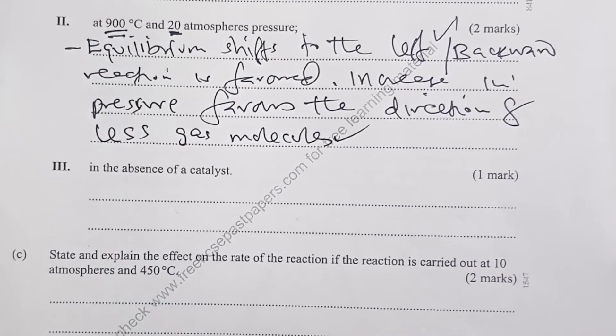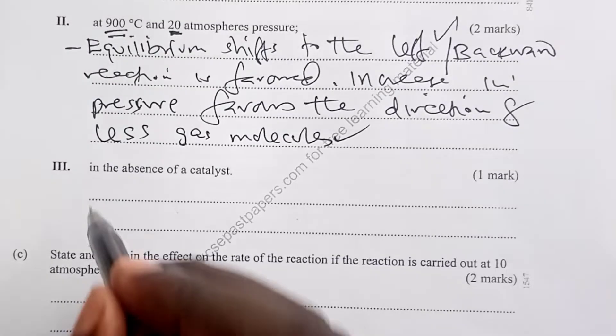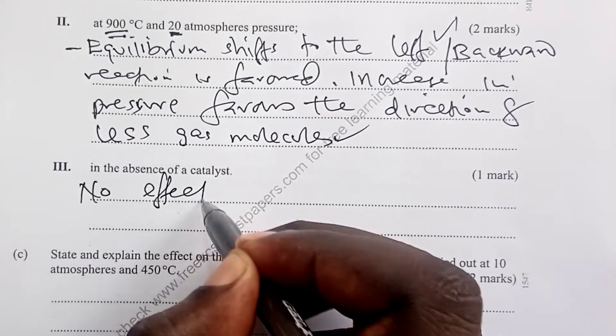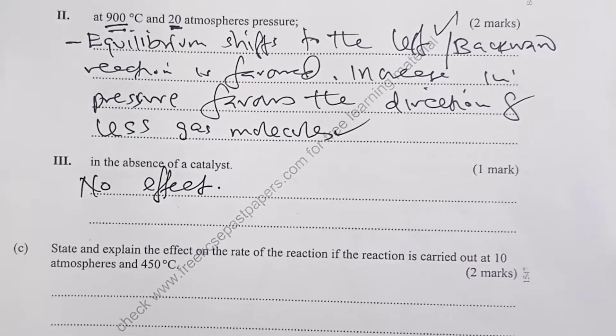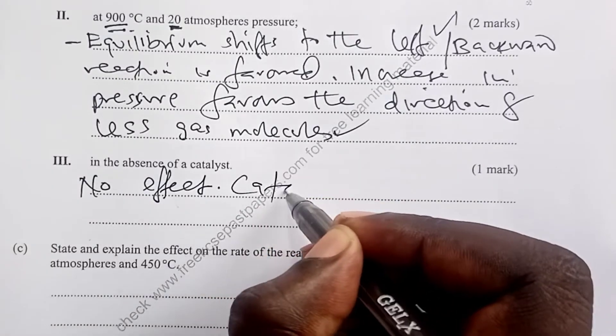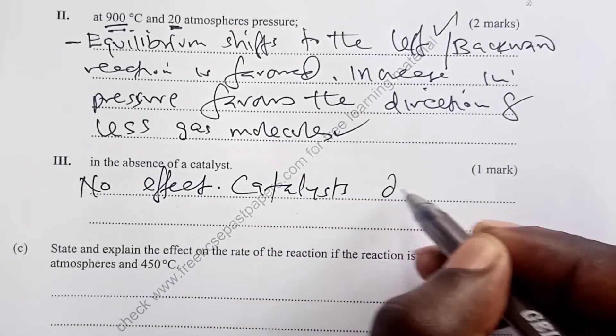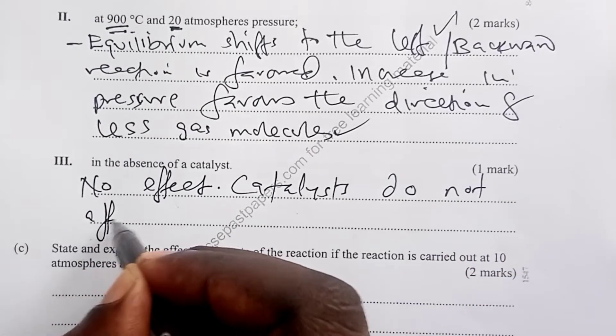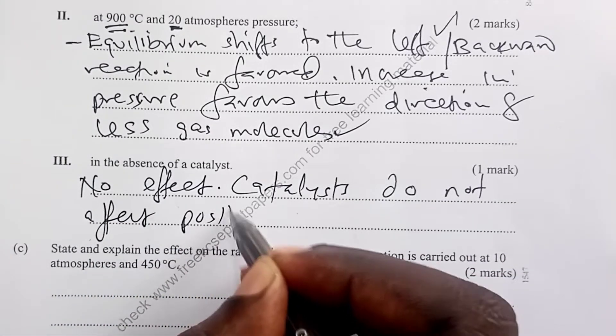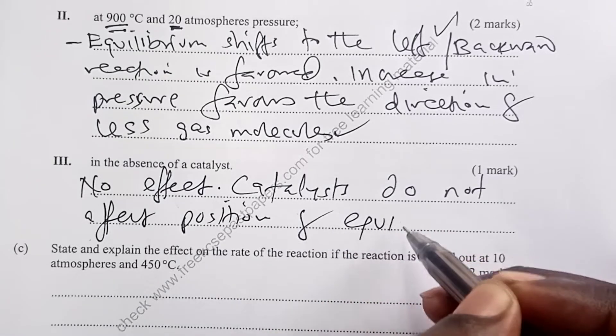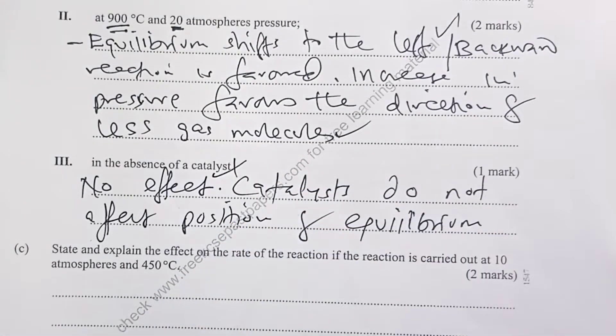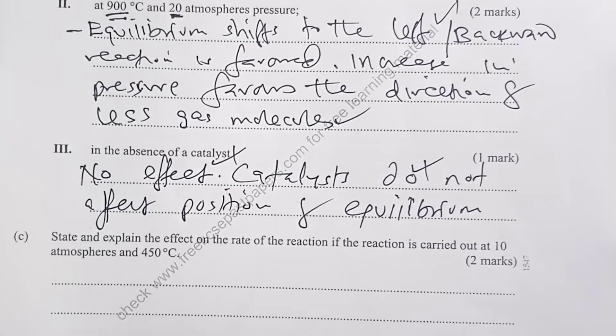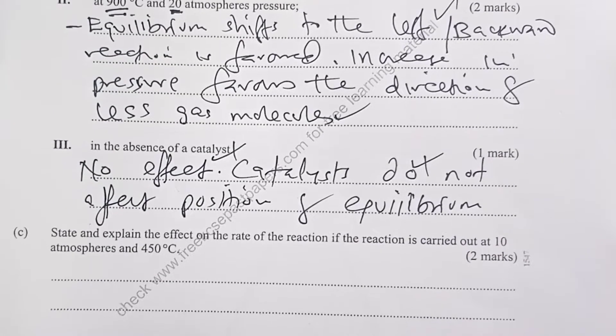Part three. Absence of a catalyst. We've agreed a catalyst has no effect on the position of equilibrium. So, the effect is nil, and then you explain that catalysts do not affect position of equilibrium. Half a mark for no effect, catalysts do not affect position of equilibrium. Another half total to four.